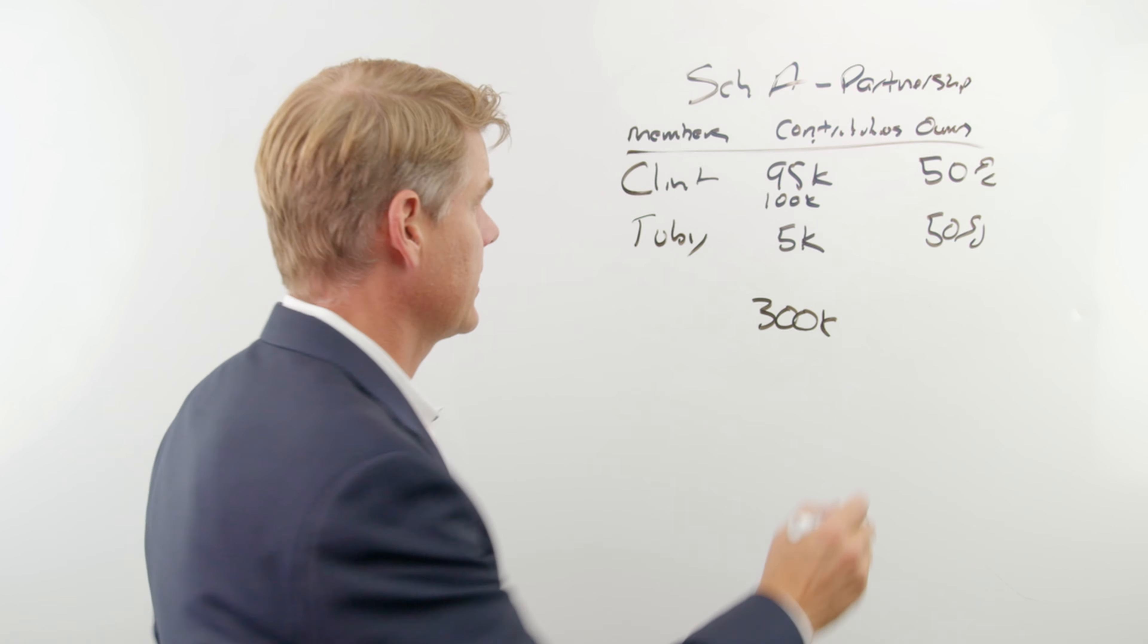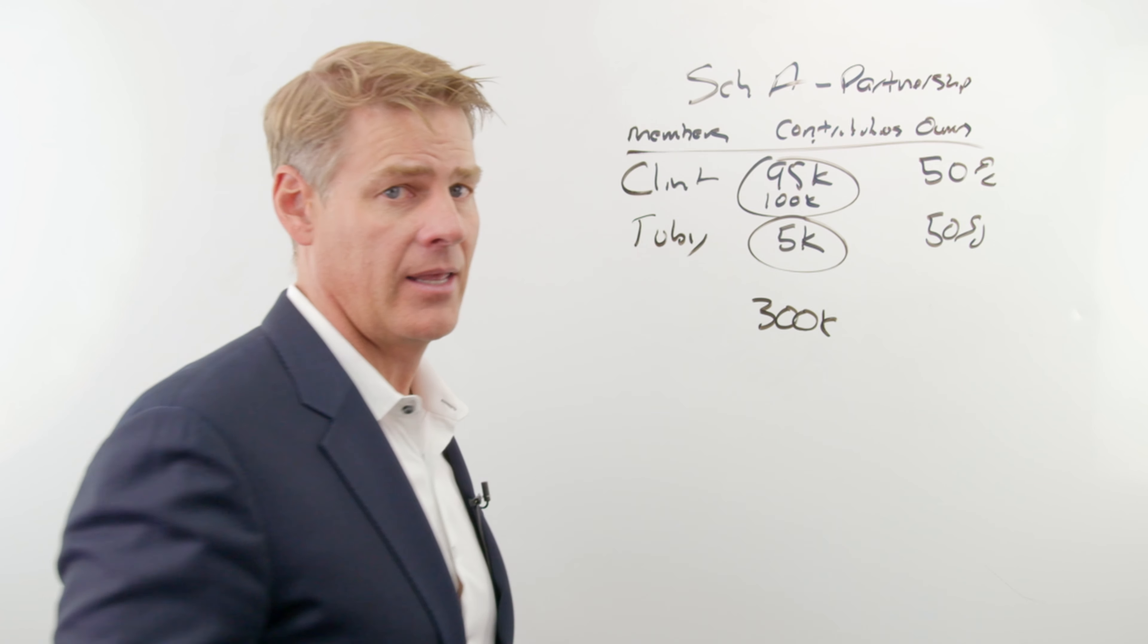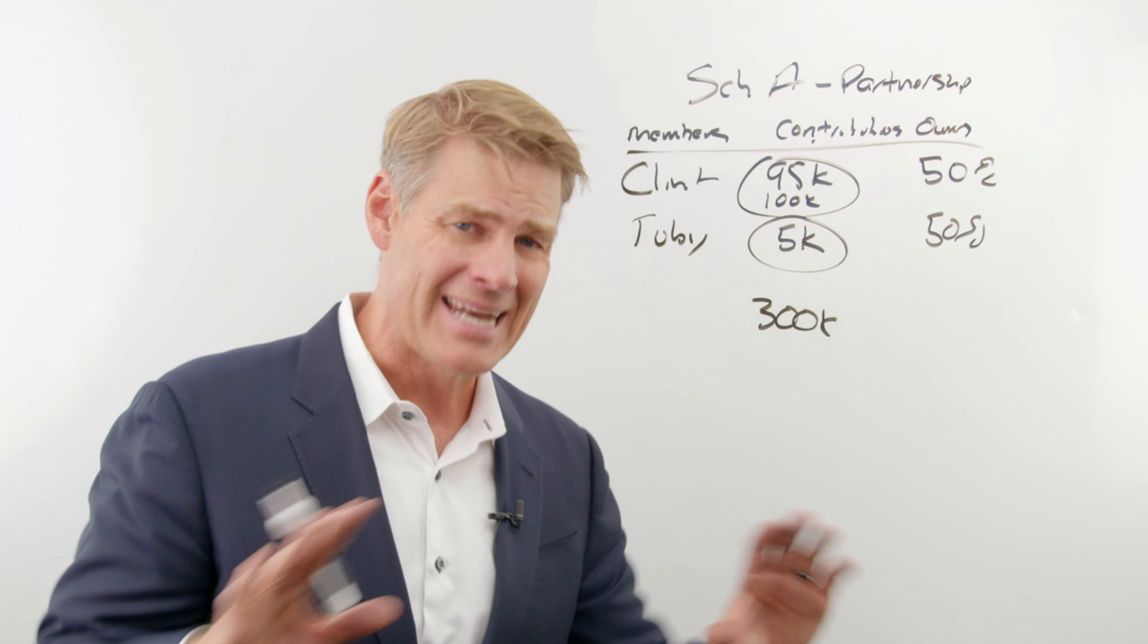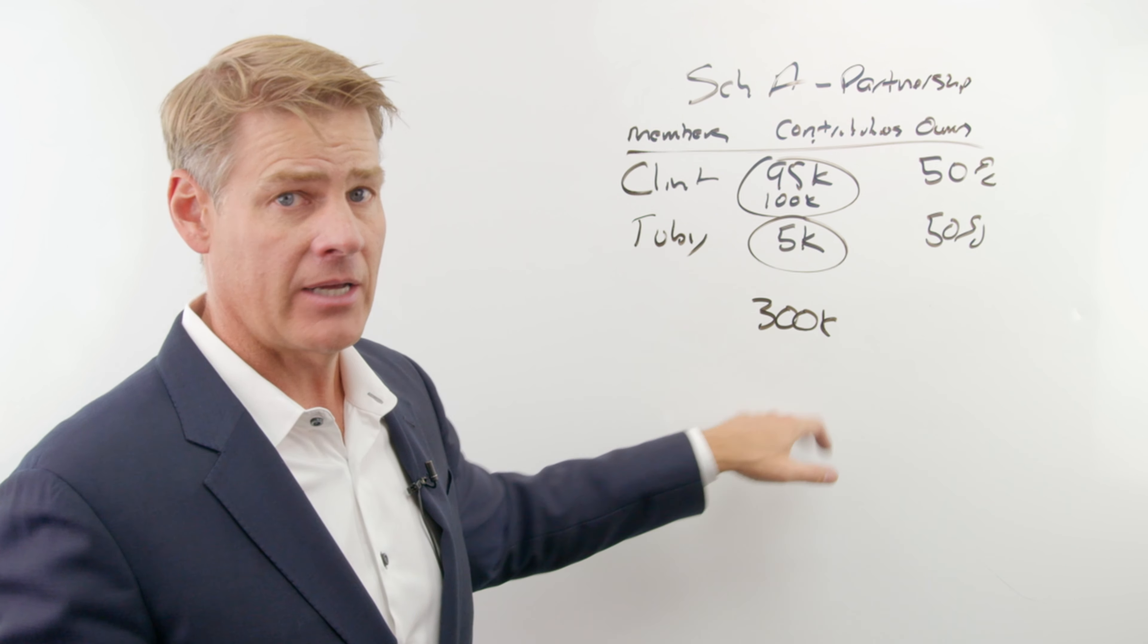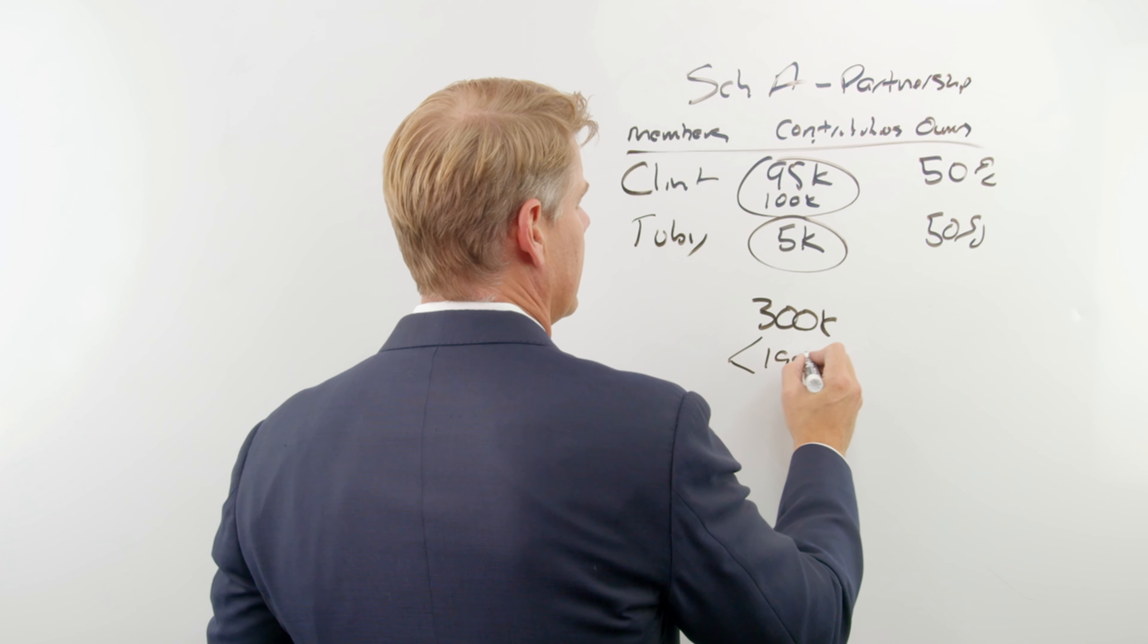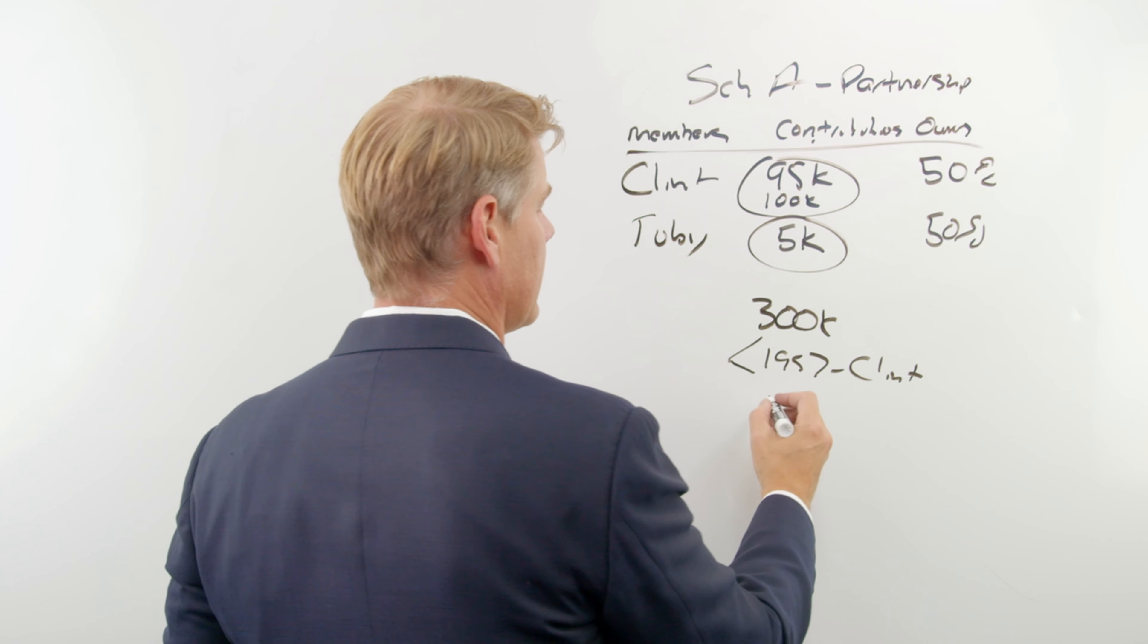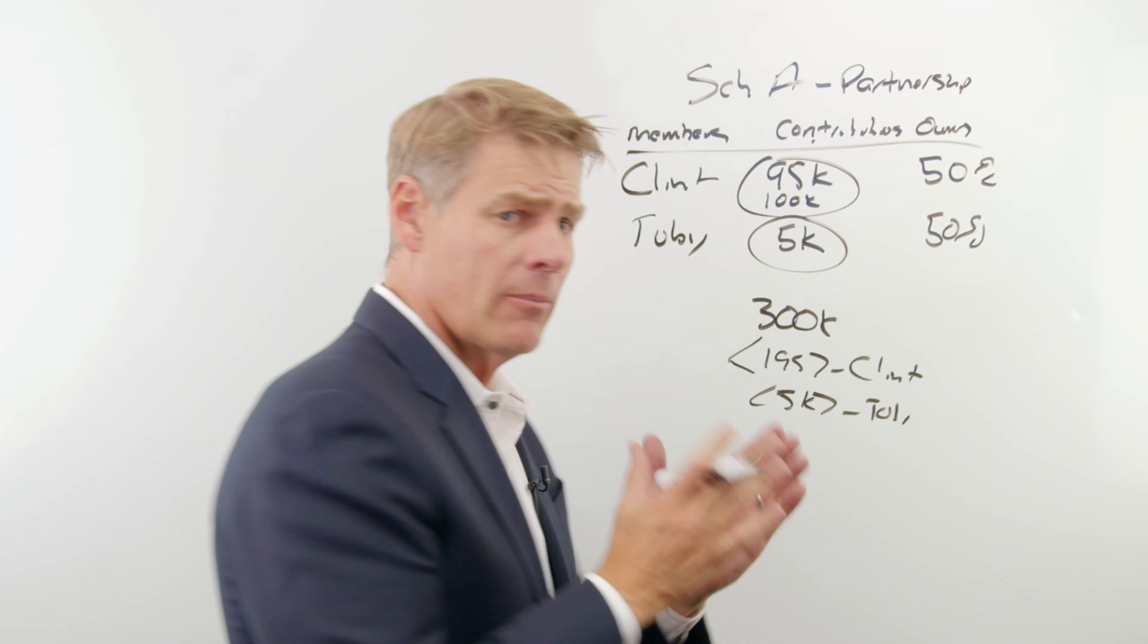What's gonna happen here is we're gonna take this $300,000, and the first thing we're gonna do is we're gonna say, hey, how much have the members contributed to that LLC versus how much have they pulled out? So if I put in $195,000, and I never took a nickel out of it, then when it comes to distributing out the 300, the first 195 is gonna go to Clint, because that's repayment of what I contributed. Toby, if he never took any money out, he's gonna get $5,000, so that's gonna go to Toby. So now we're made whole.